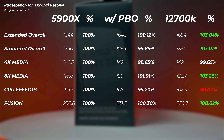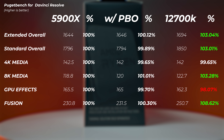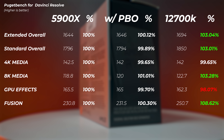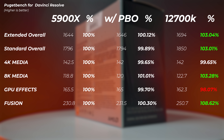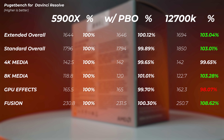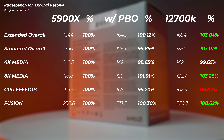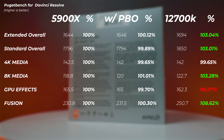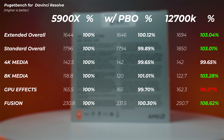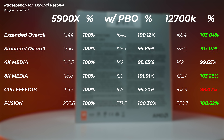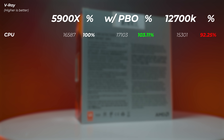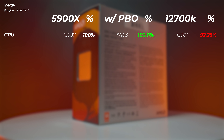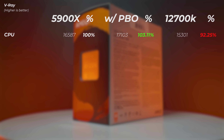In DaVinci Resolve, enabling PBO gives only a 0.1% increase on the Ryzen — not worth it. The 12700K is 3% faster in the extended and standard overall scores. However, if you're using H.265 codecs, the iGPU accelerates it much more — not fully reflected in this test — meaning Intel has a massive advantage due to hardware acceleration inside the iGPU. In V-Ray, enabling PBO gives a 3% increase on Ryzen, but the 12700K is about 8% slower than Ryzen without PBO.